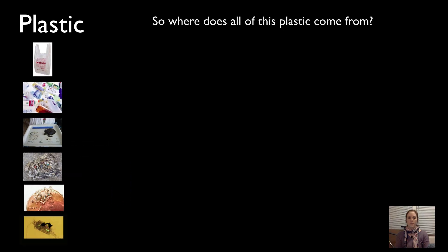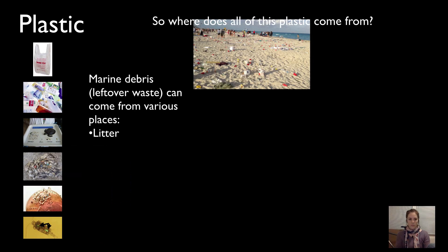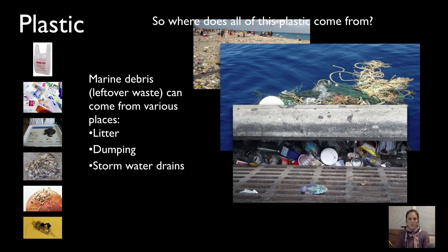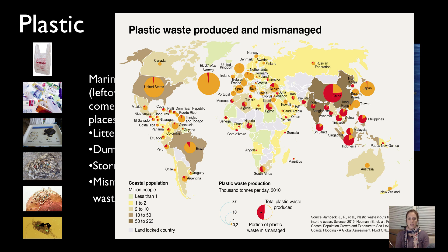So where does all of this come from? A lot of marine debris comes from litter and from dumping — boats and fishing ships just dumping their ropes in the ocean — and from storm water drains. But the most significant source of plastic is actually mismanaged plastic from municipal homes and manufacturing industries around the world. This map shows mismanaged plastic from countries with coastlines, where the red part of each pie chart represents mismanaged plastic — and you can see that many nations in Asia mismanage their plastic quite a bit.